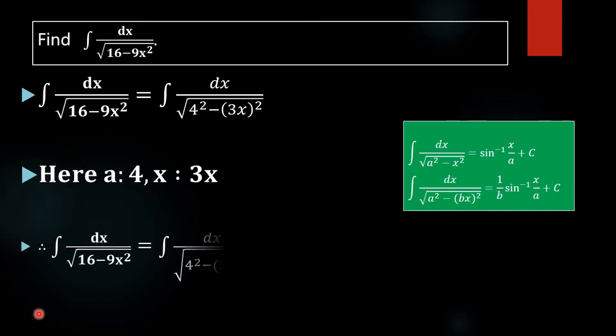In the next step, integral of dx divided by square root of 16 minus 9x squared equals integral of dx divided by square root of 4 squared minus 3x whole squared, which equals sine inverse of 3x by 4 plus c. Here x is 3x and a is 4, giving us sine inverse of 3x by 4 plus c.